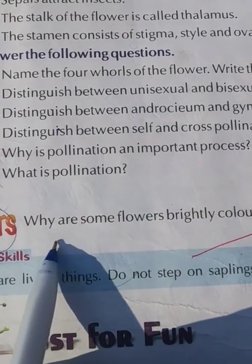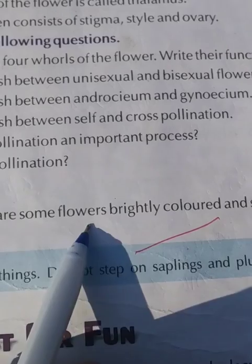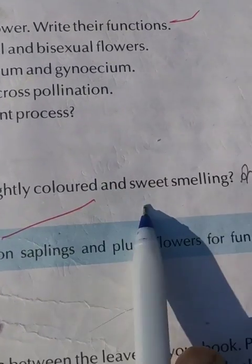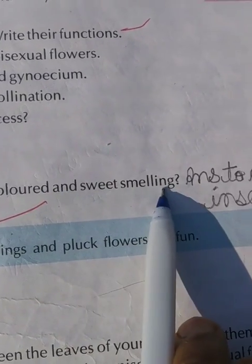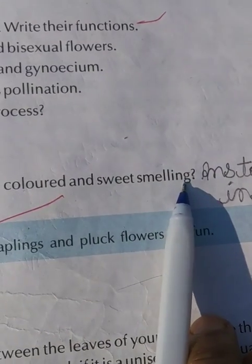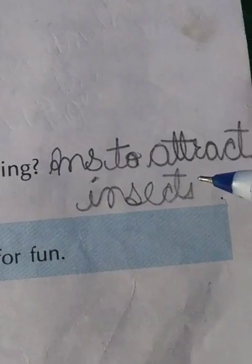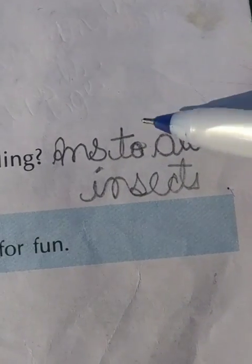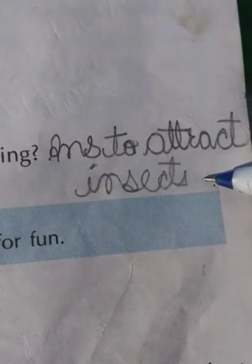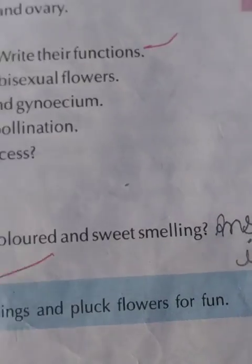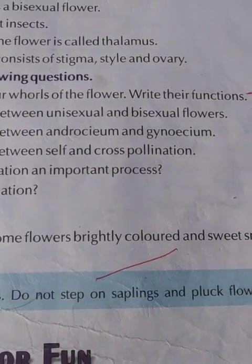HOTS: why are sunflowers brightly colored and sweet-smelling? Answer: to attract insects. Revise the full chapter.